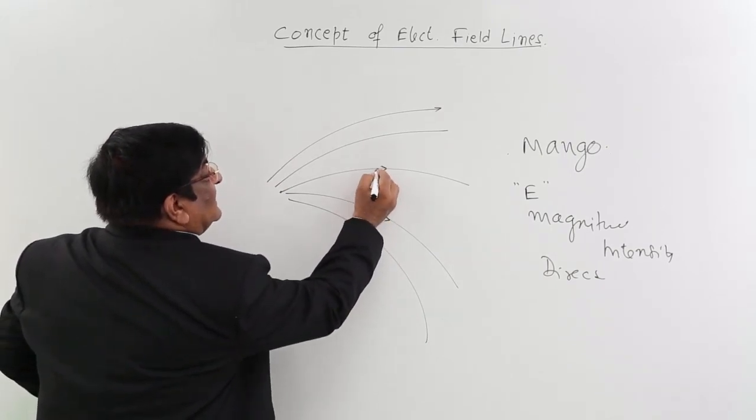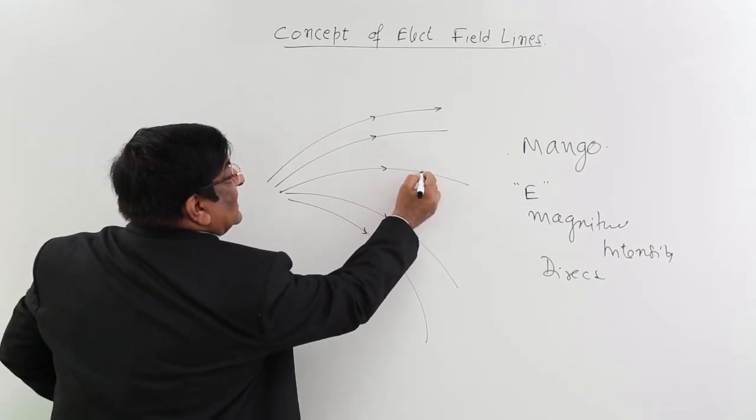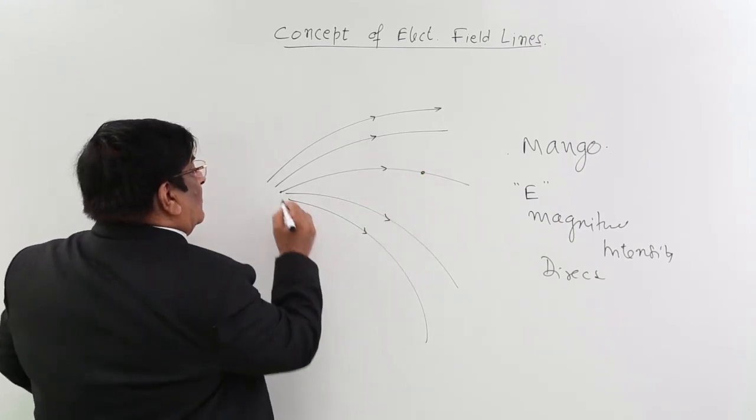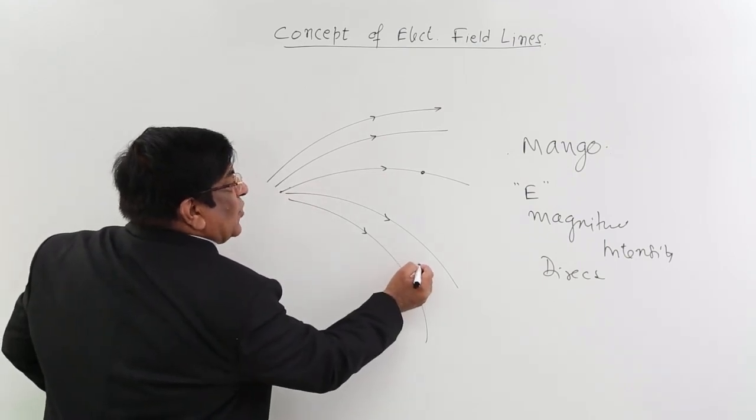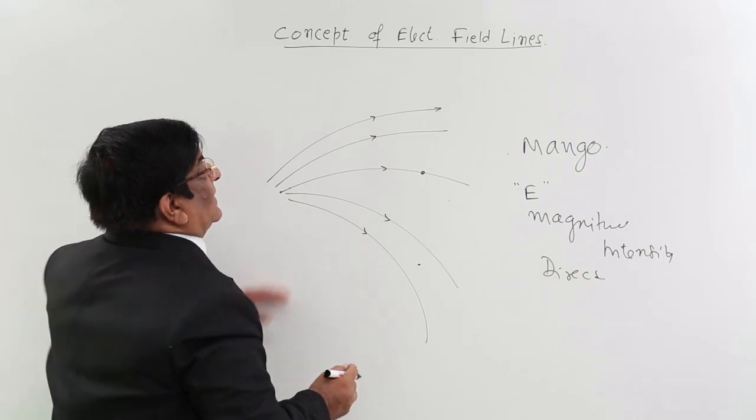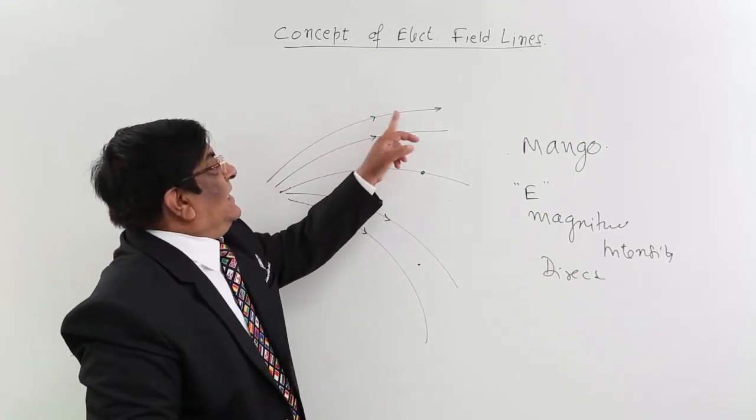Now by seeing these lines, I can tell you what is the direction of electric field here, what is the direction of electric field here, whether this is stronger electric field or this is stronger electric field. I can make this comparison.